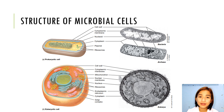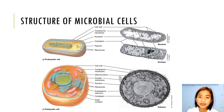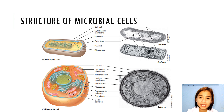Some cells have a cell wall that lends structural strength to a cell. The domain bacteria has prokaryotic cells which have fewer organelles than eukaryotic cells. The DNA genome is the complement of all genes in a cell. A gene is a segment of DNA that encodes a protein or an RNA molecule.